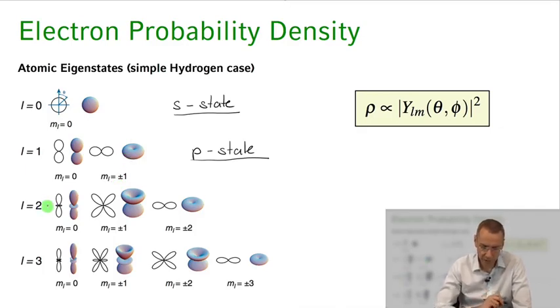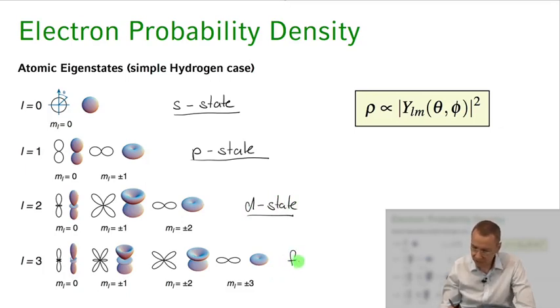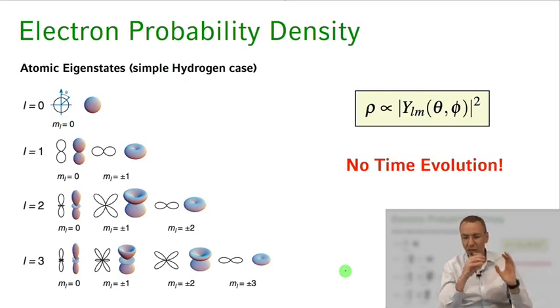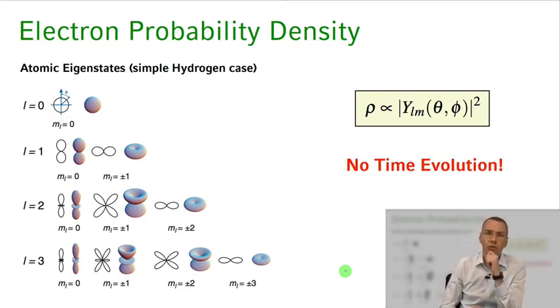And for l = 2 and l = 3, this gets even more beautiful, with this being the d-state for l = 2, and for l = 3 these are the f-states in spectroscopic notation, denoting the different orbital angular momentum states. Now one thing you can see already from these plots: there's nothing dynamical in them. The electron cloud distribution is absolutely static, so we have no time evolution for these atomic eigenstates.